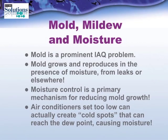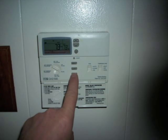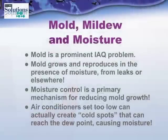Mold, mildew, and moisture. Mold is a prominent IAQ problem. Mold grows and reproduces in the presence of moisture from leaks or elsewhere. Moisture control is a primary mechanism for reducing mold growth. Air conditioners set too low can actually create cold spots that reach the dew point, causing moisture.